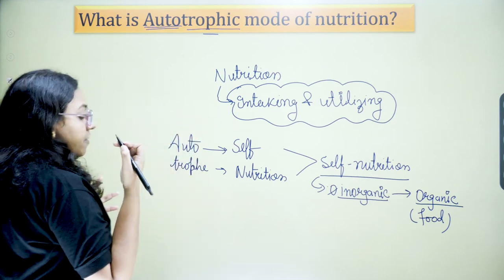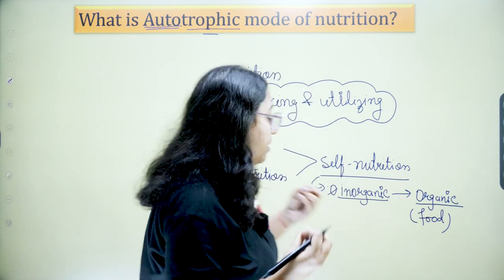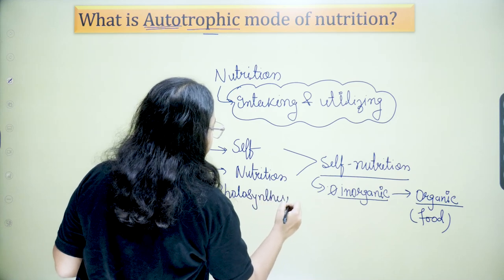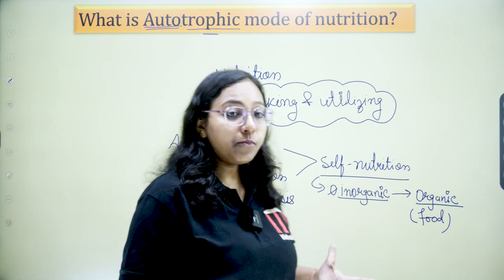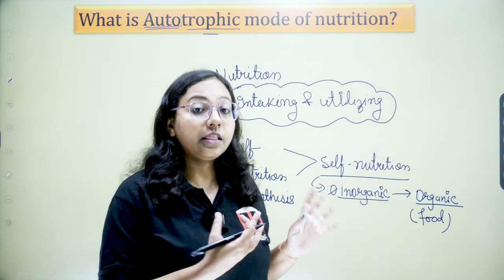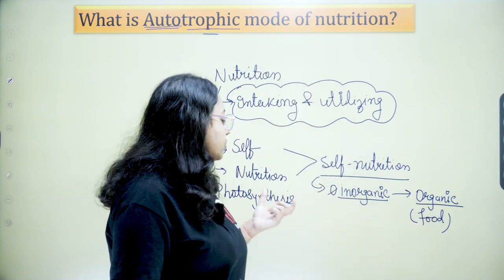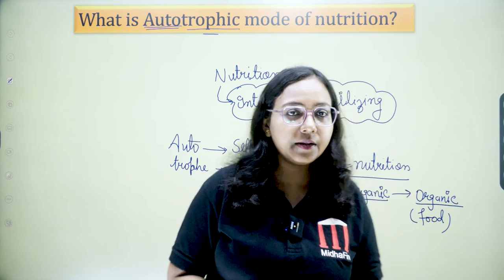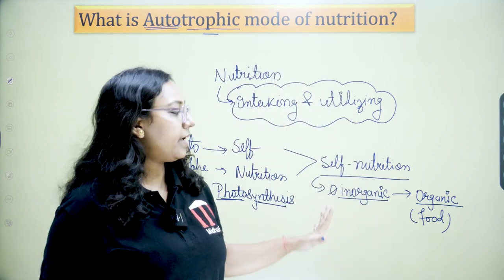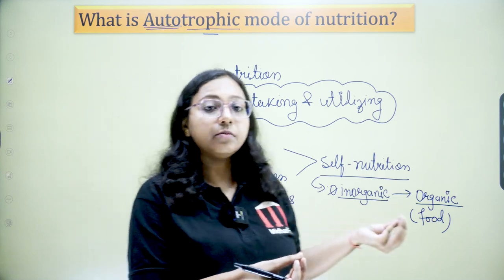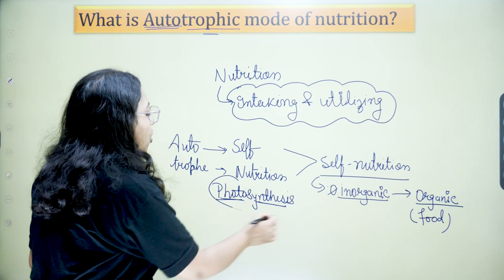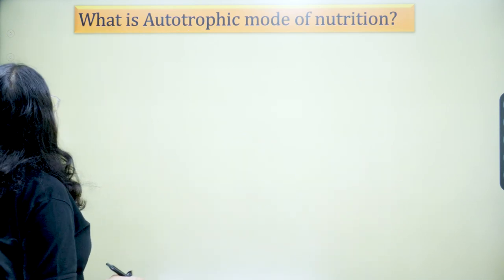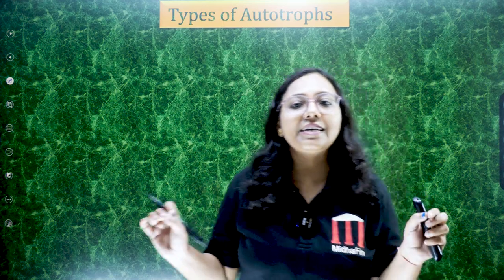When the word 'autotroph' comes to mind, we always think about photosynthesis, because this is the main process through which plants make their own food. Photo means light and synthesis means making. Plants make their own food by themselves and do not need any other organism to depend upon. That is why it is called autotrophic mode of nutrition, famously known as photosynthesis. But today our real concern is the types of autotrophs.